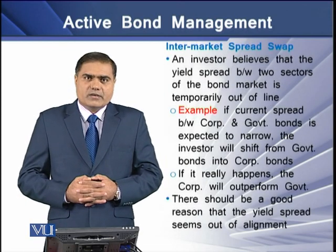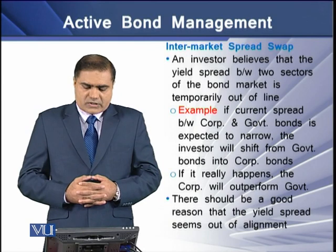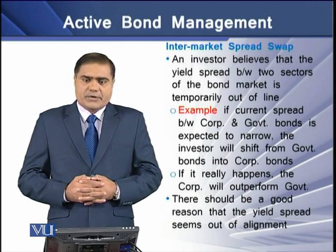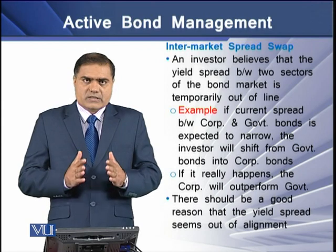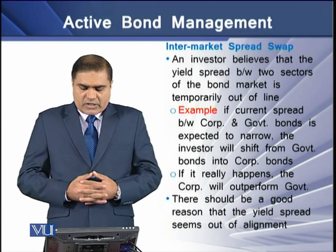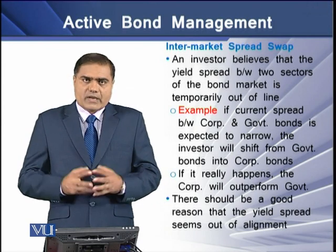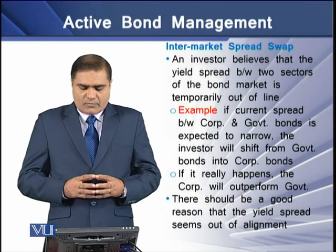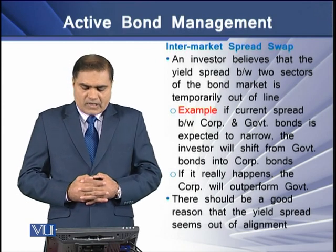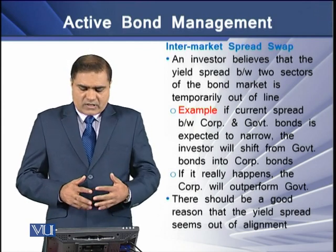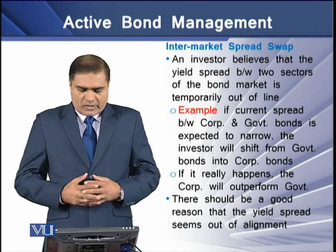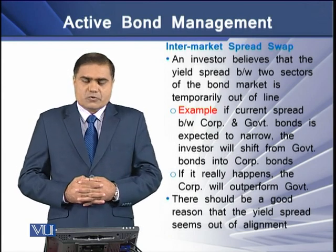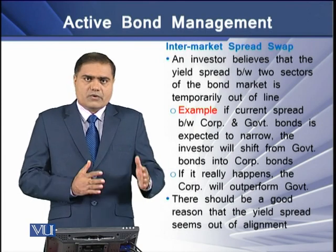The second type is the intermarket spread swap. It involves an investor who believes that the yield spread between two sectors of the bond market is temporarily out of line. For example, if the current spread between corporate and government bonds is expected to narrow, the investor will shift from government bonds into corporate bonds. If this happens, corporate bonds will outperform government bonds. There should be a good reason to believe the yield spread is out of alignment.